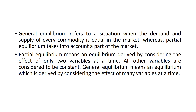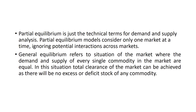General Equilibrium is basically macroeconomic in nature, but Partial Equilibrium is micro in nature. Partial Equilibrium means an equilibrium derived by considering the effect of only two variables at a time; all other variables are considered to be constant. But General Equilibrium means the equilibrium which is derived by considering the effect of many variables at a time — it is aggregate in nature, meaning we are looking at it as a whole.